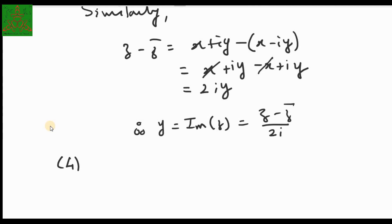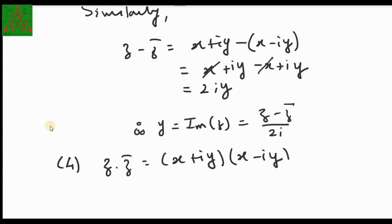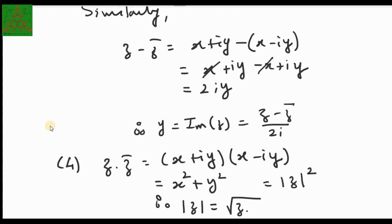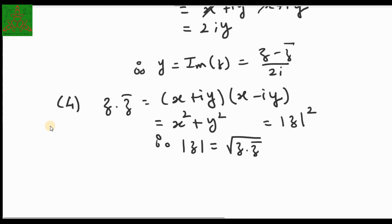For property 4, z · z̄ = (x + iy)(x − iy) = x² + y² = |z|². Therefore |z| = √(z · z̄), since modulus is never negative, taking the square root of both sides gives this result.